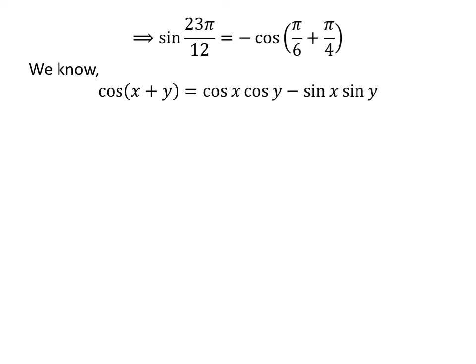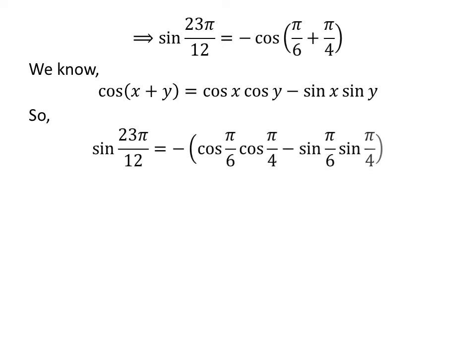We know the identity: cosine of (x + y) is equal to cosine x times cosine y minus sine x times sine y. Applying this identity gives us sine of 23π/12 is equal to minus of [cosine(π/6) times cosine(π/4) minus sine(π/6) times sine(π/4)].